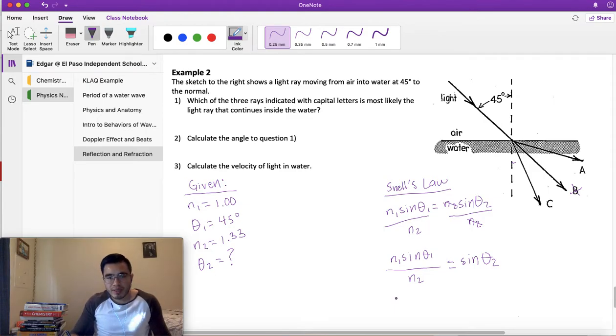Now substitute, you'll see why. n1, index of refraction for air, is 1.00 times sine of θ1, that angle is 45 degrees. We're going to divide by n2, index of refraction of water, that is 1.33. This is equal to sin(θ2).